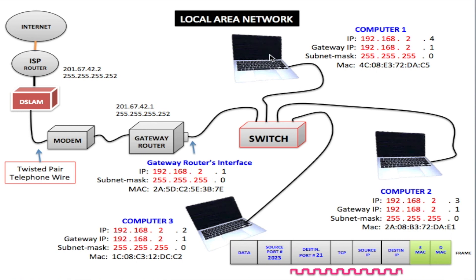Let's say the user of computer number one wants to send a message to computer number three, but all this user has is the IP address of computer number three — they don't have the MAC address. The user would enter the IP address into the browser. What the computer would do is check its cache to see if it has the MAC address for this computer. If it has that MAC address, it's easy — all it has to do is send the message directly using the MAC address. However, if that information is not in the cache, the computer will send a message to the network interface card to send out an ARP request.